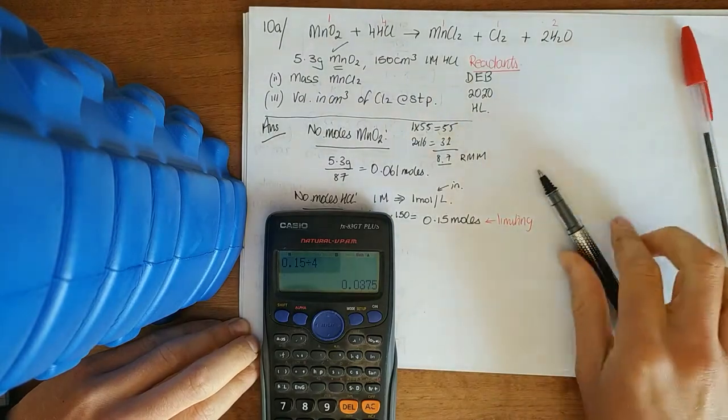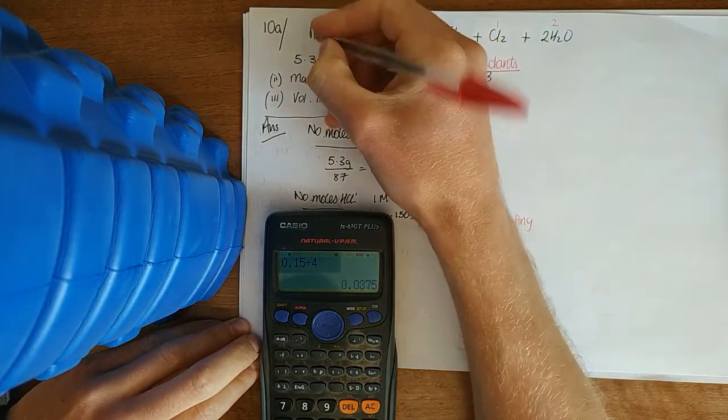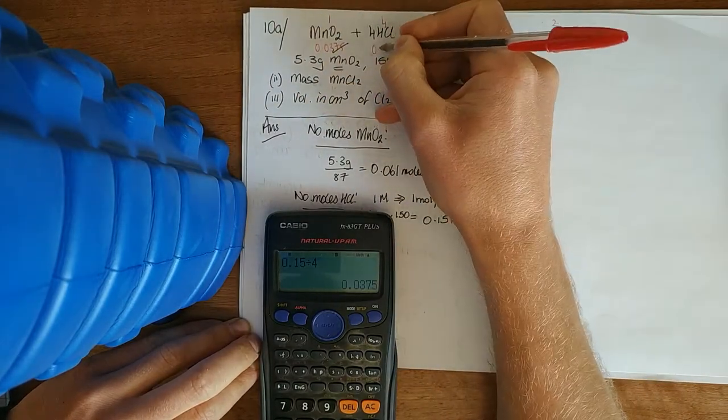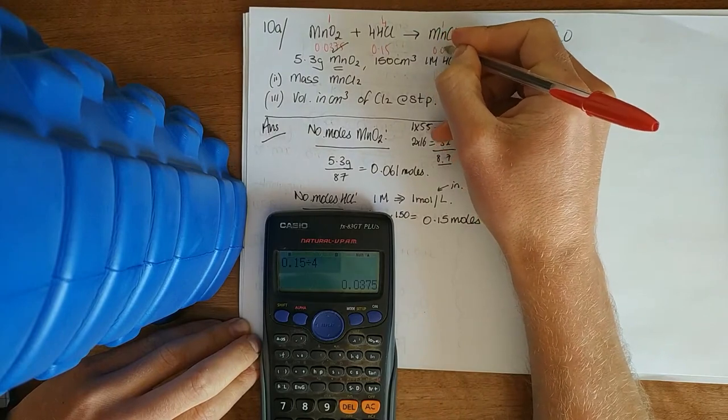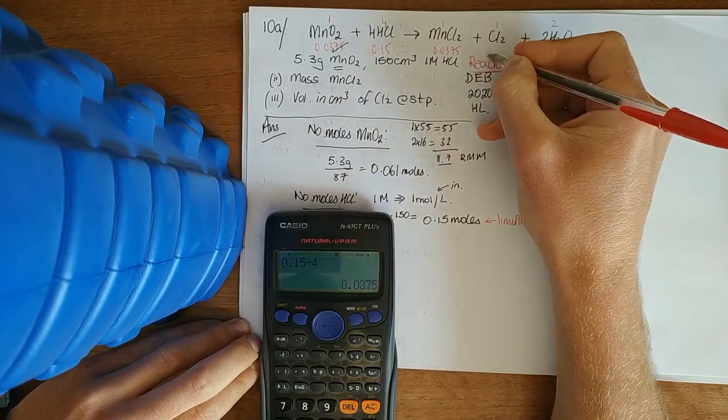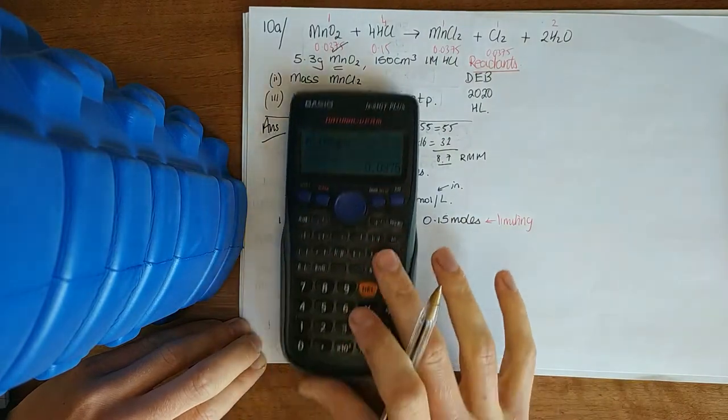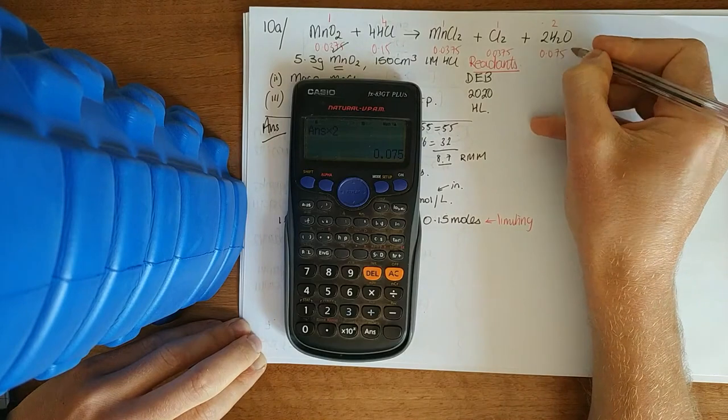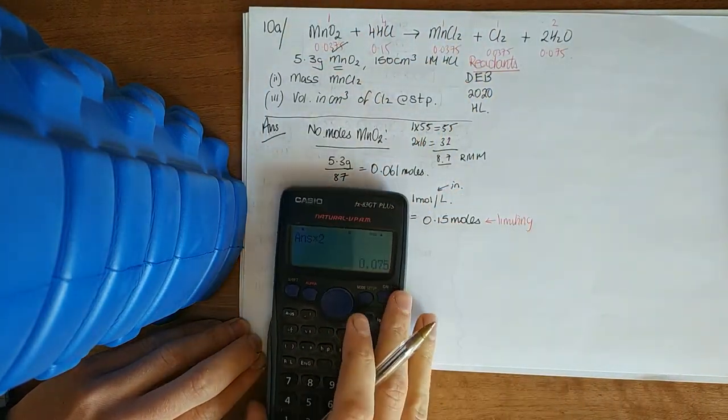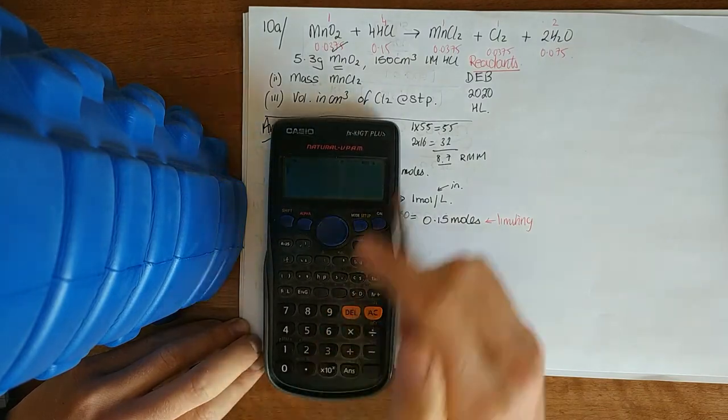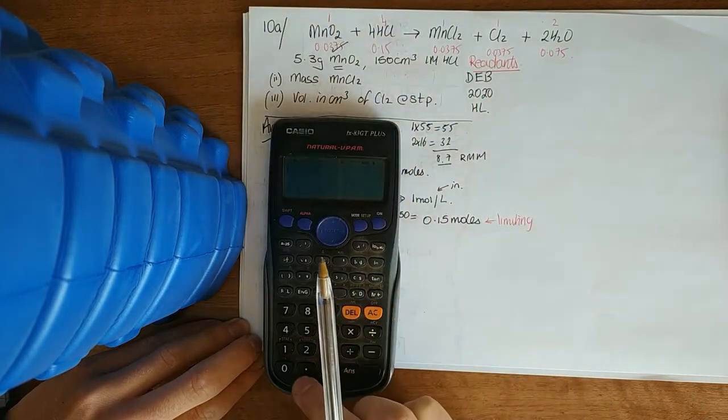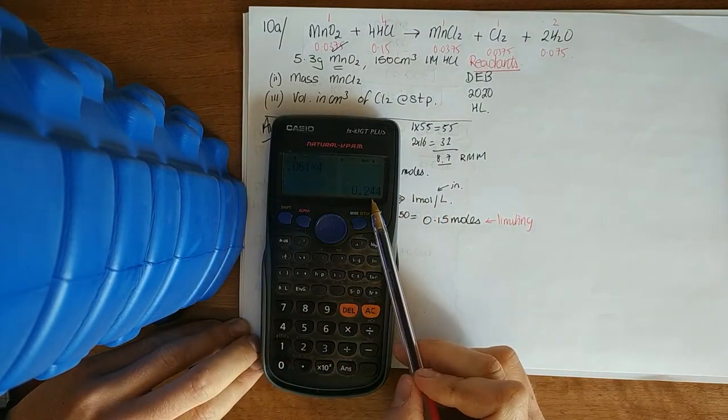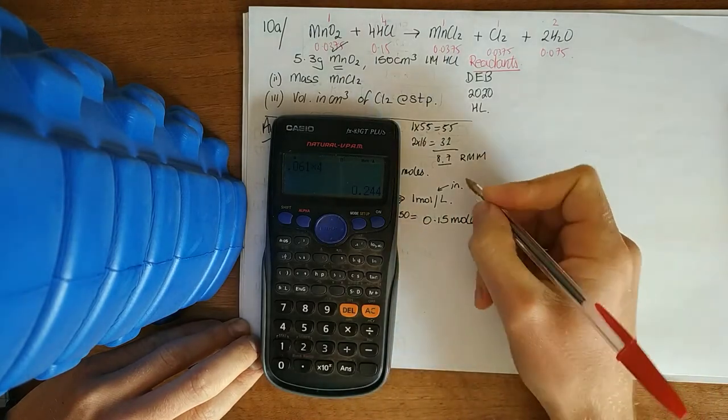Limiting. And I'm actually just going to fill this in one. Now into the actual equation. So 0.0375 up here. This here was 0.15. 1 is to 1. So 0.0375. 0.0375. And then times that by 2 for your water. 0.0575. If you're working with your manganese dioxide just to double check it, 0.061. That's the number of moles of this. To bring it up to HCl times it by 4. Which is 0.244.